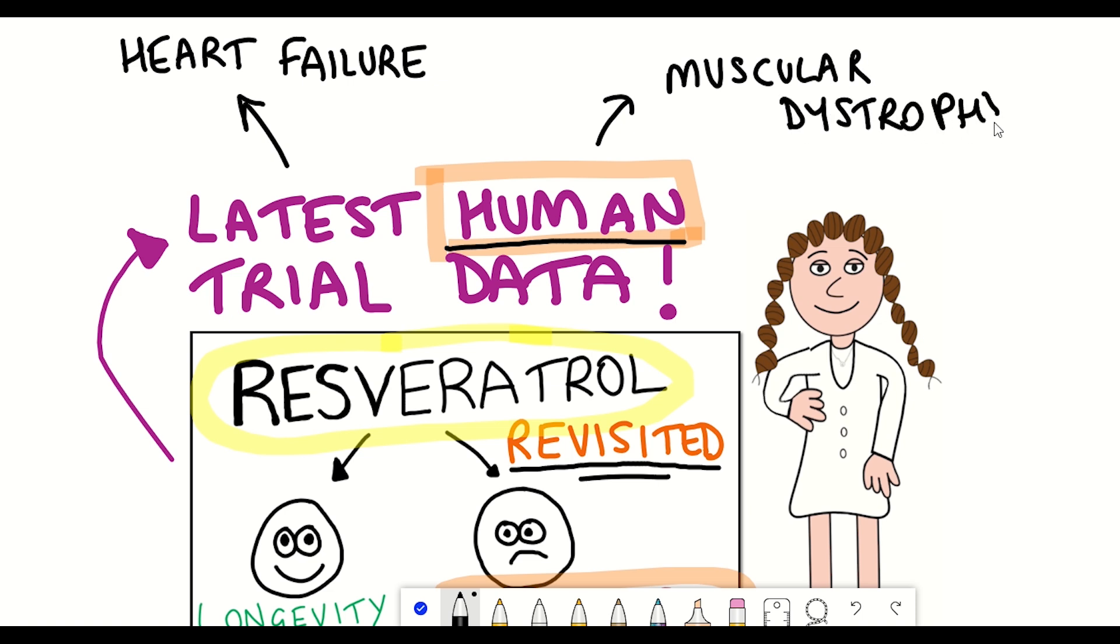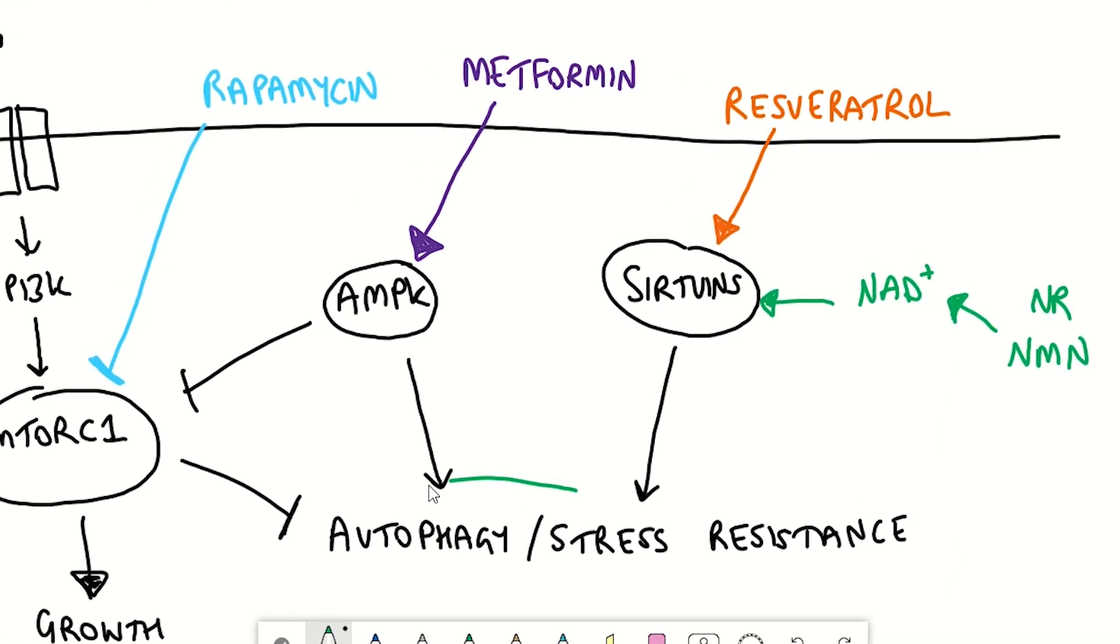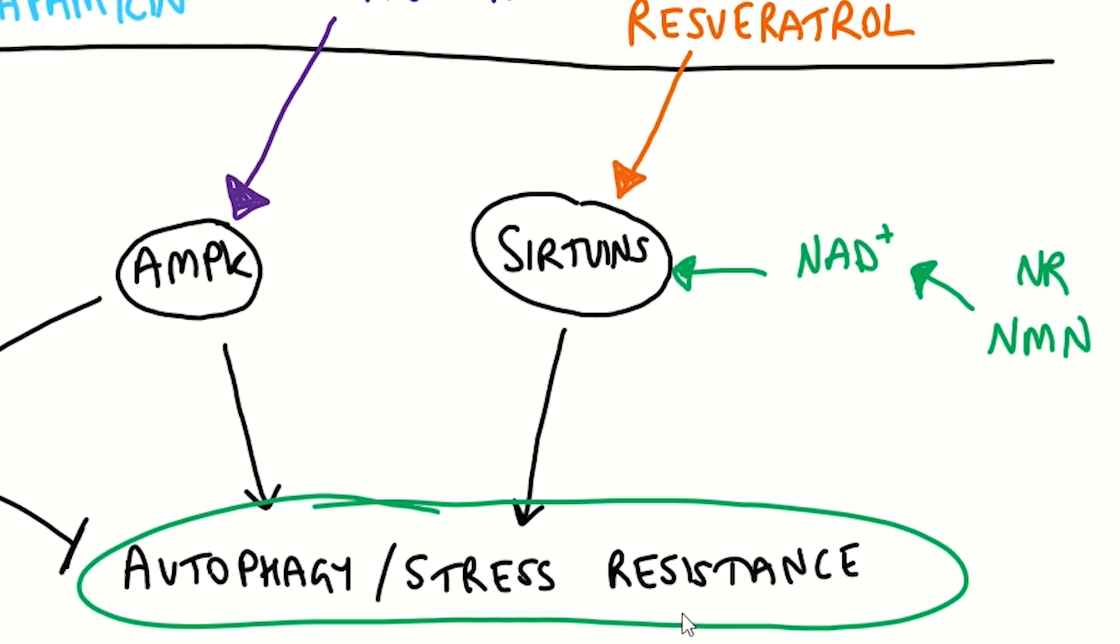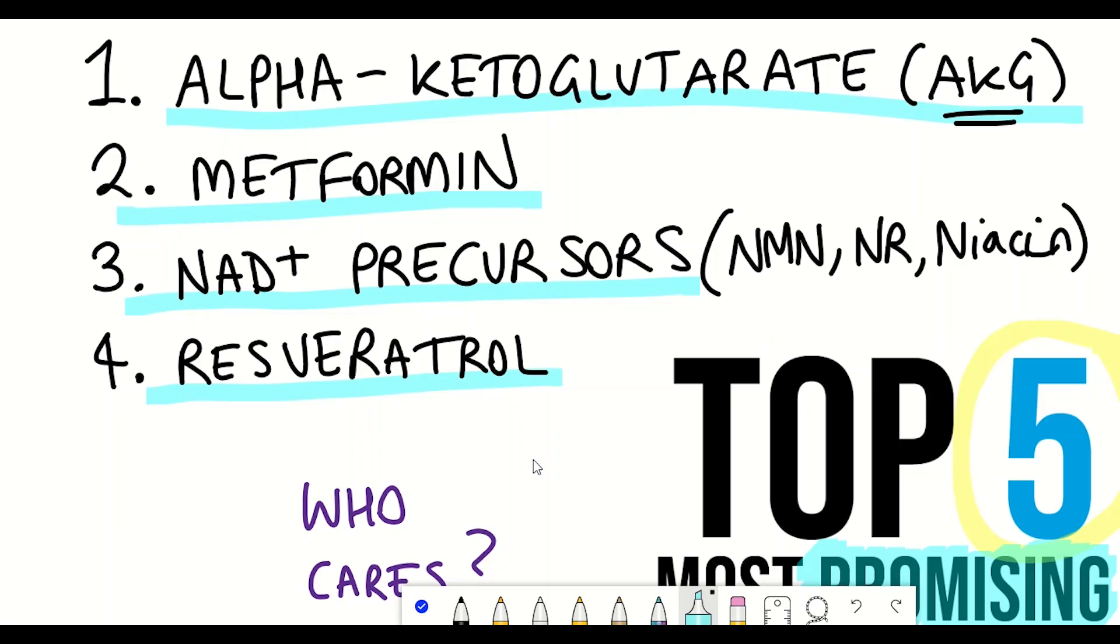And the mechanism by which resveratrol is thought to be working is by activating the NAD+ dependent protein, SIRT1, which is a sirtuin, which is that family of enzymes I mentioned earlier in this video. And SIRT1, amongst many things, is thought to be able to upregulate stress-resistant pathways within a cell. And so it plays a key role in the dysregulated nutrient signaling pathways that is one of the hallmarks of aging. And so for these reasons, resveratrol made it into my list.